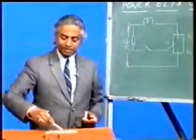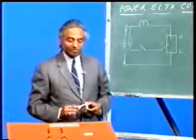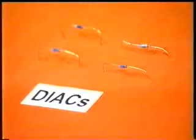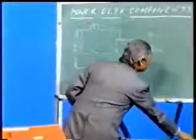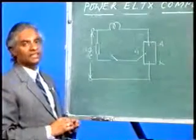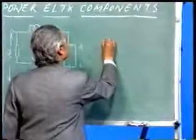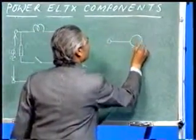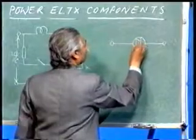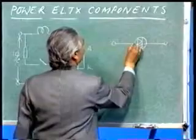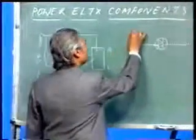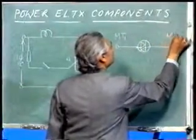This finishes the first part — the SCR. Now the second very important component is the diac. Here you can see these small components — they are all diacs. SCR was a 4-layer, 3-terminal, 3-junction semiconductor device. But diac is only a 2-terminal device — it is also a 4-layer semiconductor device, but there are only two terminals, and we call them main terminal 1 and main terminal 2.